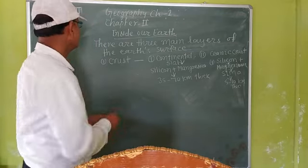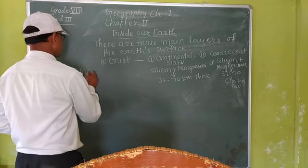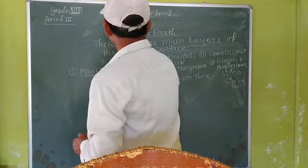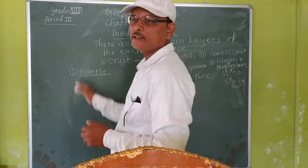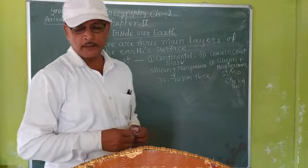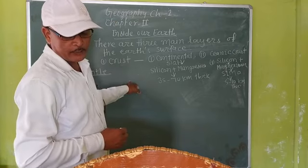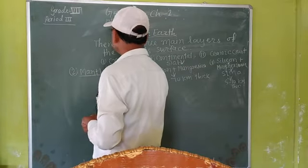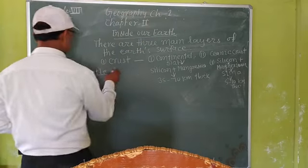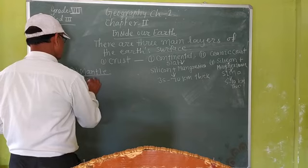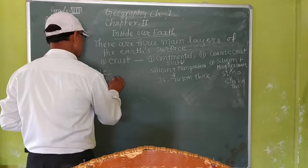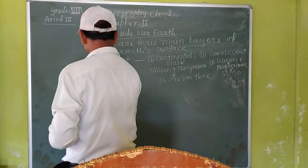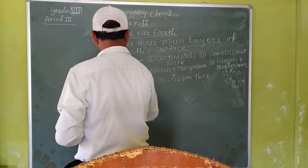The second topic is mantle. The layer below the crust is known as the mantle. This is the second layer of the Earth's surface. The mantle is about 2,900 kilometers thick. The mantle consists of two types: upper mantle and lower mantle.